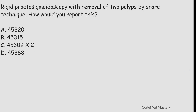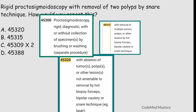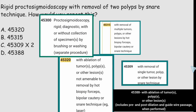Next question: rigid proctosigmoidoscopy with removal of two polyps by snare technique — how would you report this? Check option A: 45320 — proctosigmoidoscopy rigid with ablation of tumor, polyps, or other lesions not amenable to removal by hot biopsy forceps. Option B: 45315 — proctosigmoidoscopy rigid with removal of multiple tumors, polyps, or other lesions by hot biopsy forceps, bipolar cautery, or snare technique. Option C: 45309 — proctosigmoidoscopy rigid with removal of a single tumor or lesion by snare technique. Option D: 45388 — colonoscopy with ablation of tumor, polyps, or other lesions.